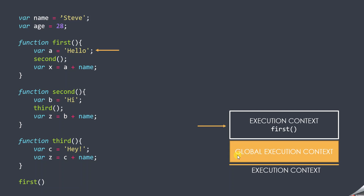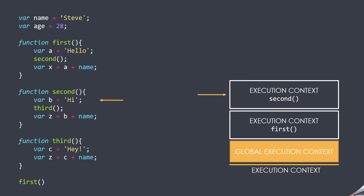The currently executing execution context was the global execution context, so on top of it, a new execution context got created for this first function, and now this execution context becomes the active execution context. Inside this first function, we are creating a variable A, so this variable will be stored in the execution context of the first function. Then we are calling the second function, so a new execution context for the second function will be created on top of the currently executing execution context. The execution context of the second function will now become the active context.